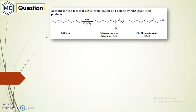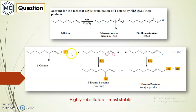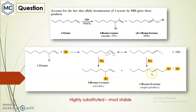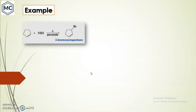A question: account for the fact that allylic bromination of 1-octene by NBS gives two products. The reason is that during allylic bromination, an allylic radical is first formed. This radical can be resonance-stabilized to form either a secondary radical or a primary radical. Bromine can react with either the secondary radical or the primary radical, giving a mixture of products. The more substituted product is more stable because it has one alkyl substituent on each side, while the less substituted one has only one alkyl group.